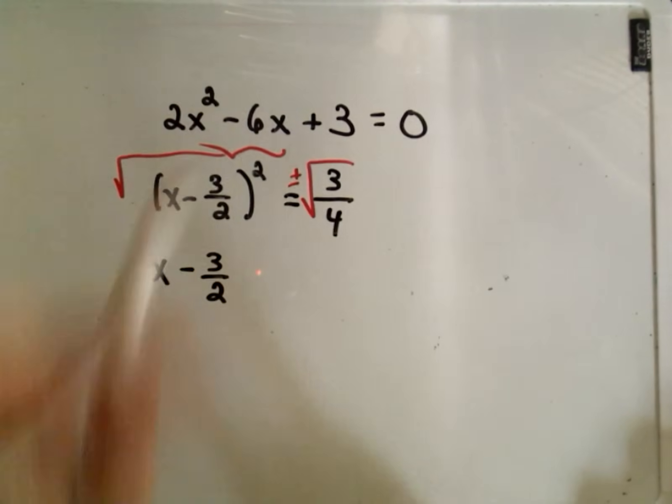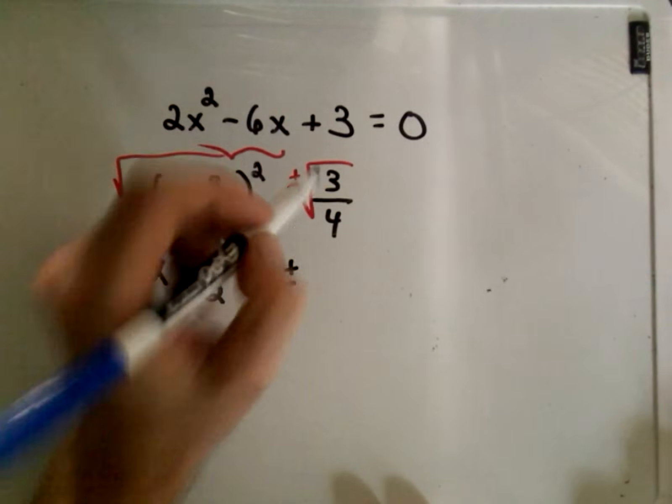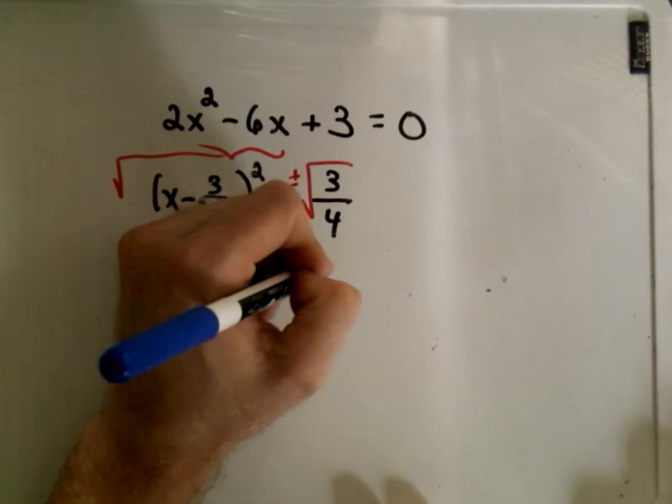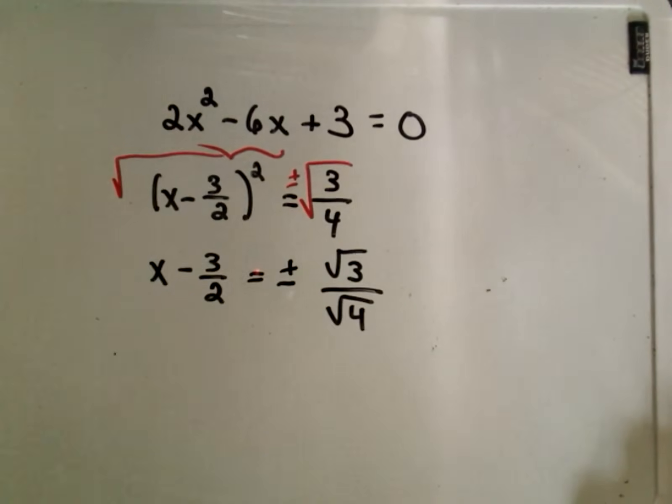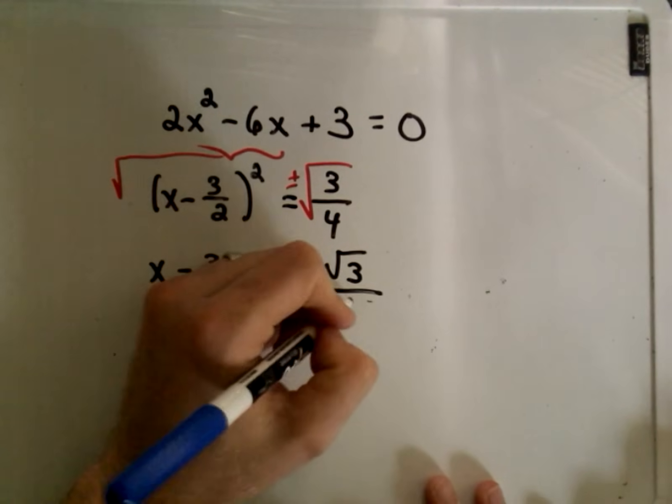And remember, when we take square roots, we have to put a plus or minus on one side. So we'll get positive, negative, square root of 3 over 4. And remember, if you have a square root of a fraction, you can break it up as the square root of the top over the square root of the bottom. So square root of 3 over square root of 4. But the square root of 4 is really just the number 2.